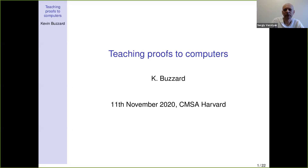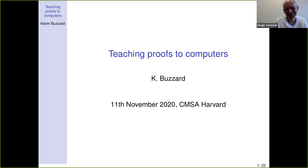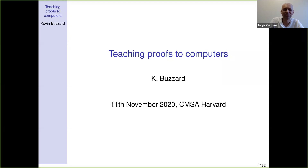Good morning everyone. We are starting our CMSA colloquium today. We are very happy to have Kevin Buzzard as our speaker. Kevin is based at Imperial College London. He was a Senior Wrangler at the University of Cambridge and established his name in algebraic number theory, but three years ago he switched interests, moving from doing number theory on paper to doing number theory on computers.